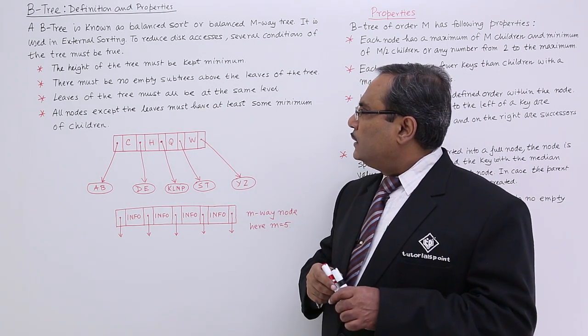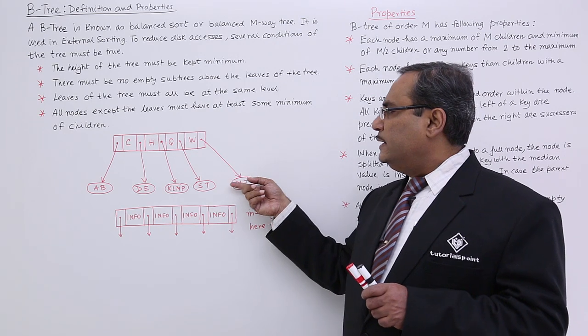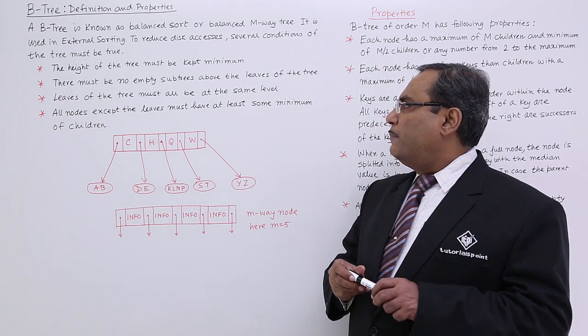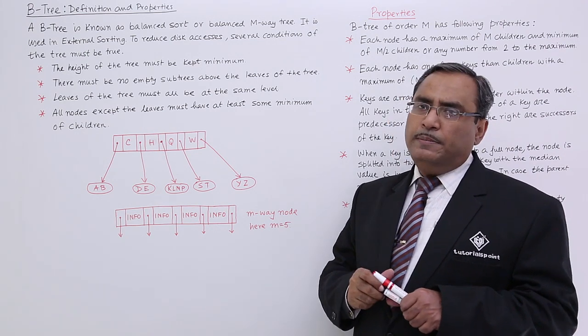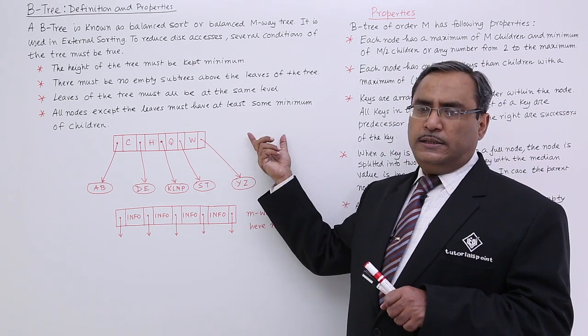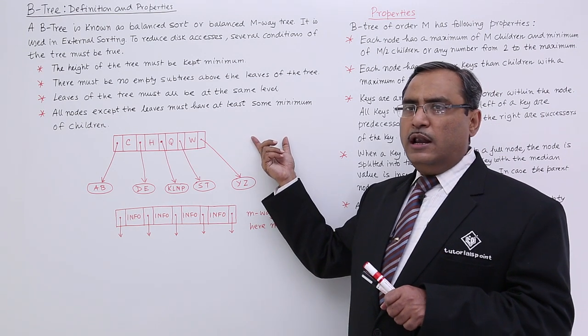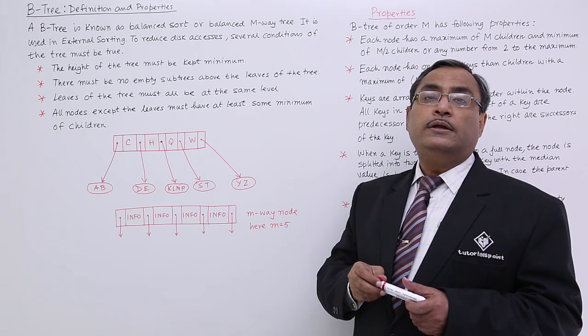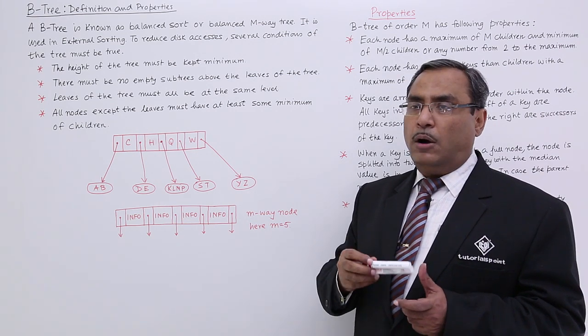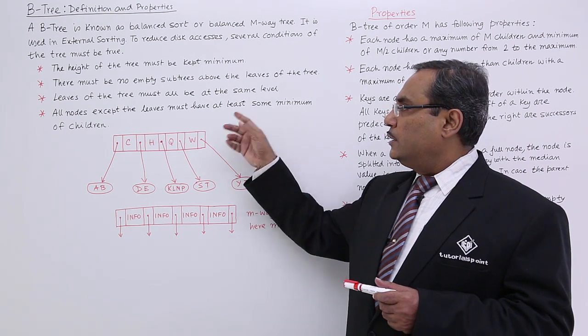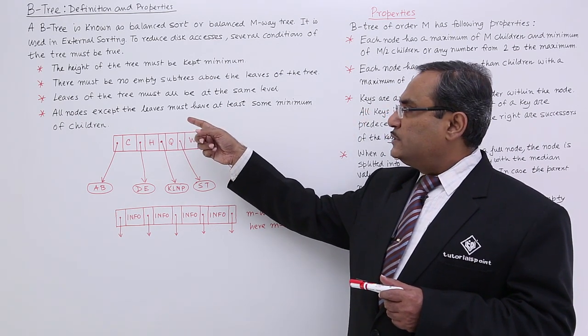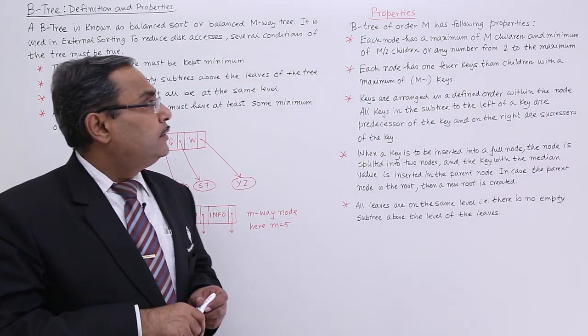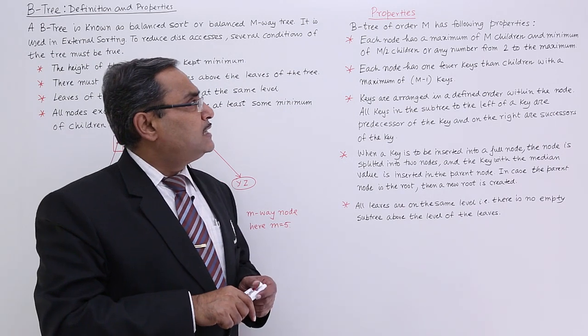Leaves of the tree must be at the same level. All the leaves must be at the same level. All nodes except the leaves must have at least some minimum number of children. You cannot expect that there will be one non-leaf node without having minimum number of children. How many children that non-leaf node should have? There will be some counting, there is some logic. I will be discussing that one. All nodes except the leaves must have at least some minimum number of children. These are the properties. Let me explain them one by one.